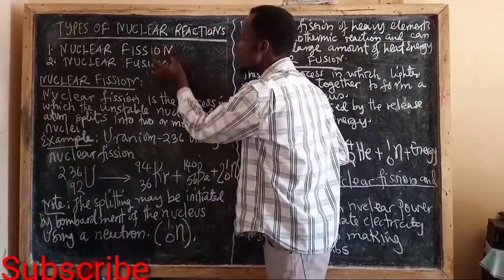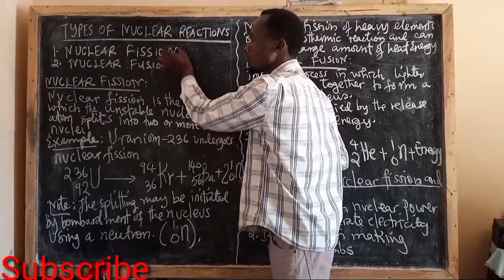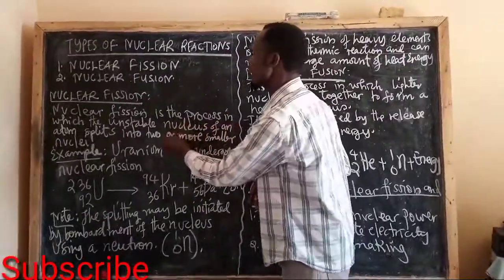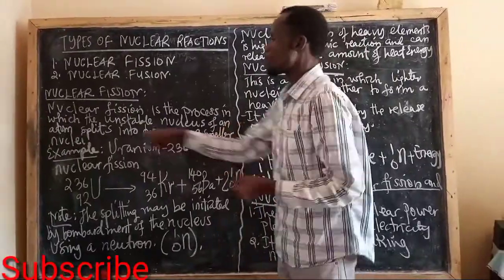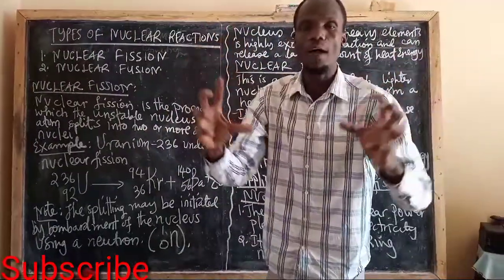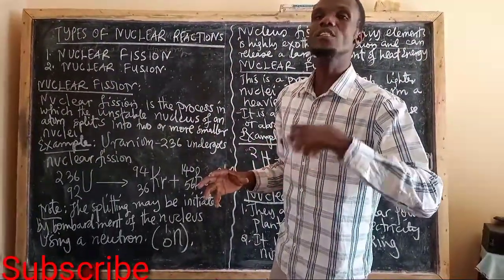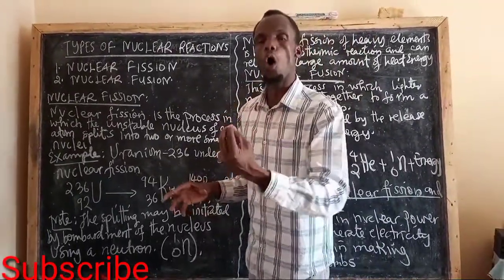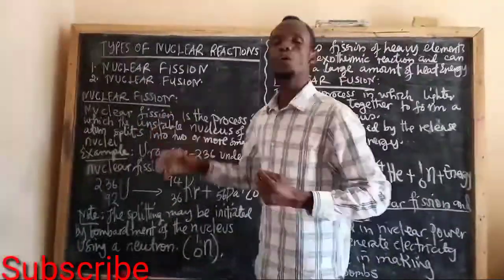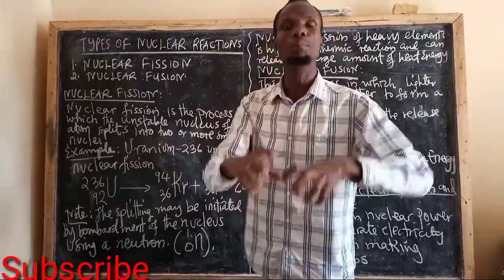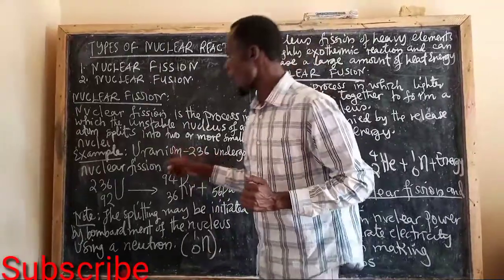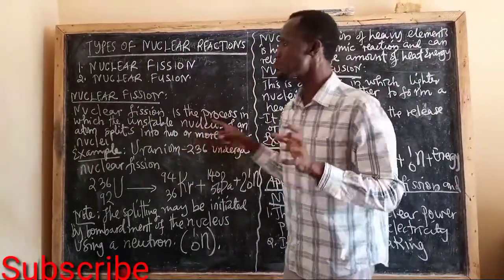To differentiate these two things, we have to know the meaning of each. Nuclear fission is the process in which the unstable nucleus of an atom splits into two or more smaller nuclei. That is, the larger unstable nucleus of an atom is broken down into at least two or more smaller nuclei, which is what we term nuclear fission — splitting down of the large nucleus to form smaller ones.